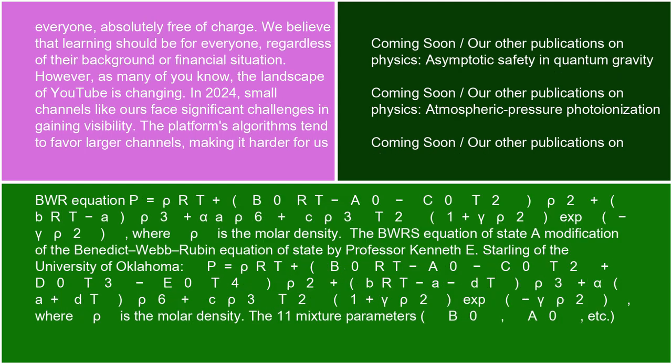The original BWR equation: P = ρRT + (B₀RT - A₀ - C₀/T²)ρ² + (bRT - a)ρ³ + aαρ⁶ + (cρ³/T²)(1 + γρ²)exp(-γρ²), where ρ is the molar density.